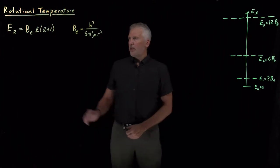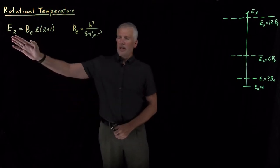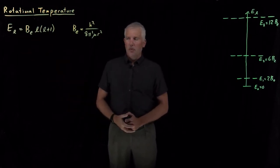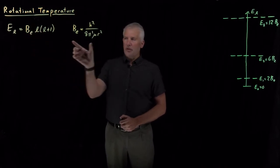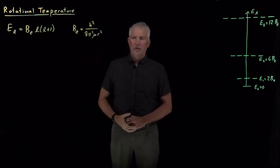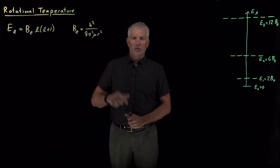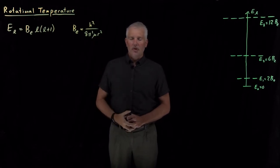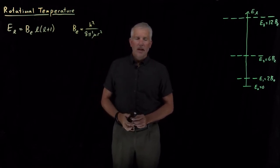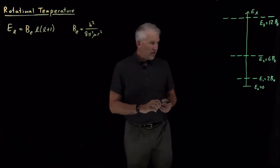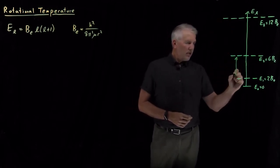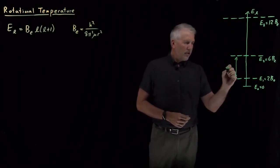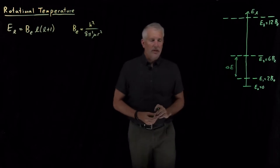We have an expression for the energy levels of a rigid rotor model that's been simplified by the definition of this rotational constant, which is a collection of fundamental constants and properties of the individual molecule. This has given rise to an energy ladder with different degenerate levels and different spacing between these energy levels.